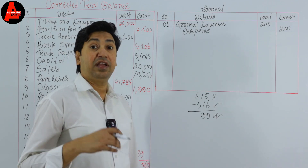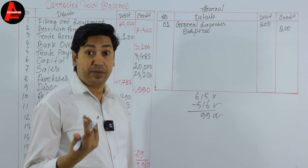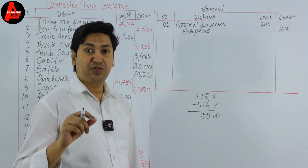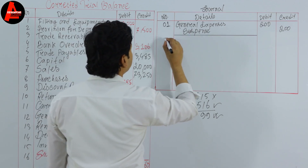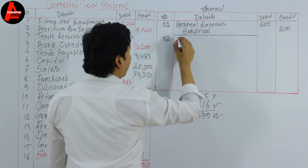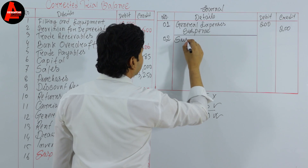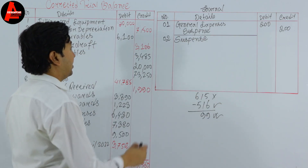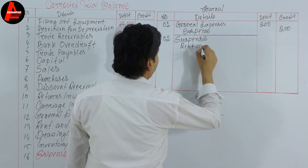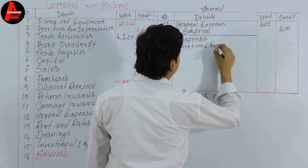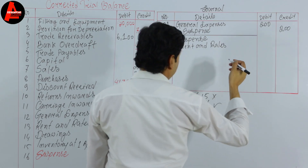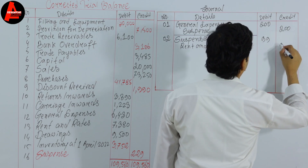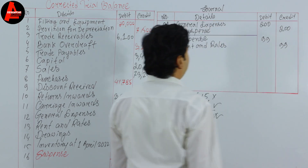When an expense increases it will be debited; when it is decreased it will be credited. For number two, the debit account will be suspense, and we will decrease this expense — so rent and rate account will be credited. We write $99 on the debit side and $99 on the credit side.